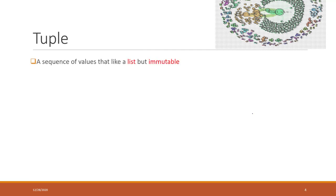So let's look at tuple. A tuple is a sequence of values, very much like a list. But the difference is that the items in the tuple cannot be changed. Once a tuple has been defined, you cannot change the items in that tuple — so that is immutable.